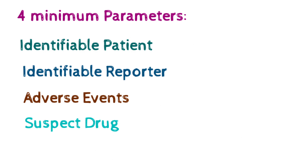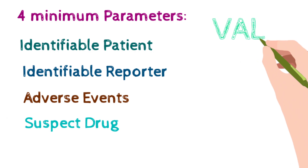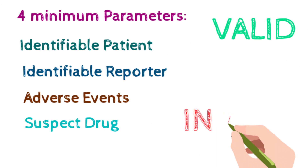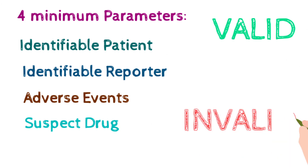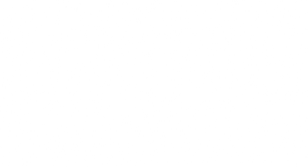A question may arise: why is it necessary to report all four minimum criteria? The answer is, if your report contains all four parameters, it is treated as a valid report. If you miss any of the above-mentioned criteria or parameters, your report will be treated as an invalid report. So this is what we call a report in Pharmacovigilance.